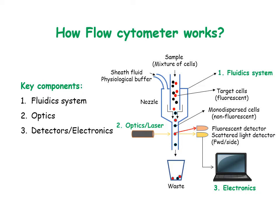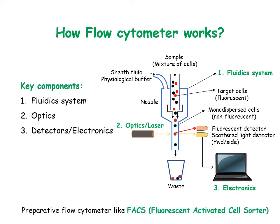In case the target cell needs to be separated from other cells for downstream experiments, a preparative flow cytometer like a fluorescence activated cell sorter may be used. I will be making a separate video on this.